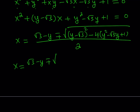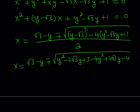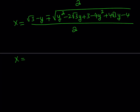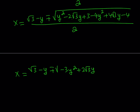Expanding (y minus root 3) squared gives y squared minus 2 root 3 y plus 3. Distributing the negative 4 gives negative 4y squared plus 4 root 3 y minus 4. Inside the radical, combining like terms: y squared minus 4y squared is negative 3y squared; 4 root 3 y minus 2 root 3 y is positive 2 root 3 y; and 3 minus 4 gives negative 1. The whole thing is divided by 2.